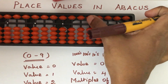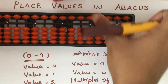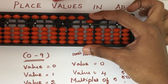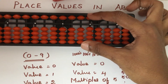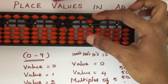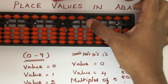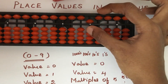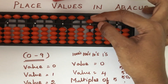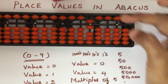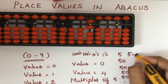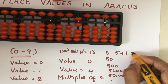Now let us take the ones place rod. If I place one upper bead to the beam, the value is five. Along with this five, I am going to place one more lower bead to the beam — the value is five plus one, which equals six.